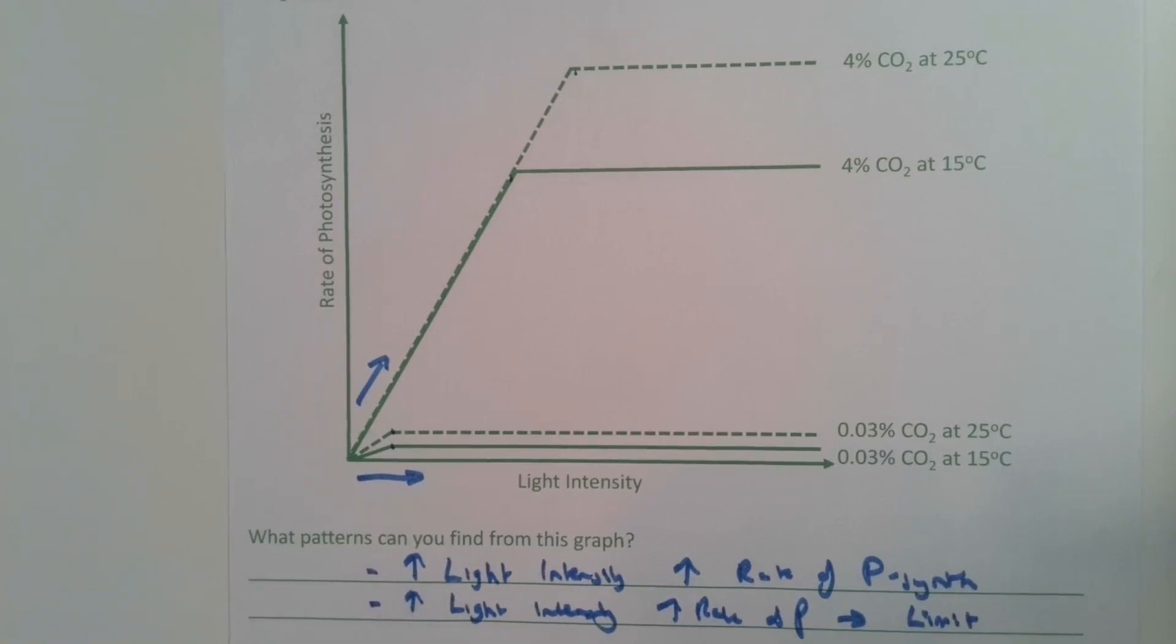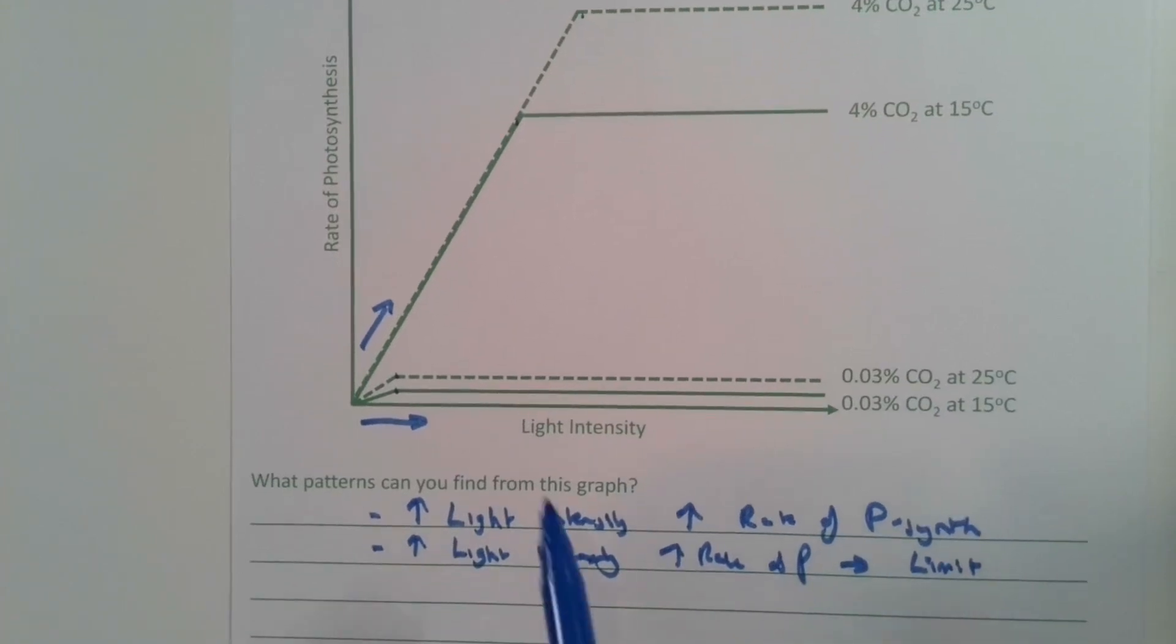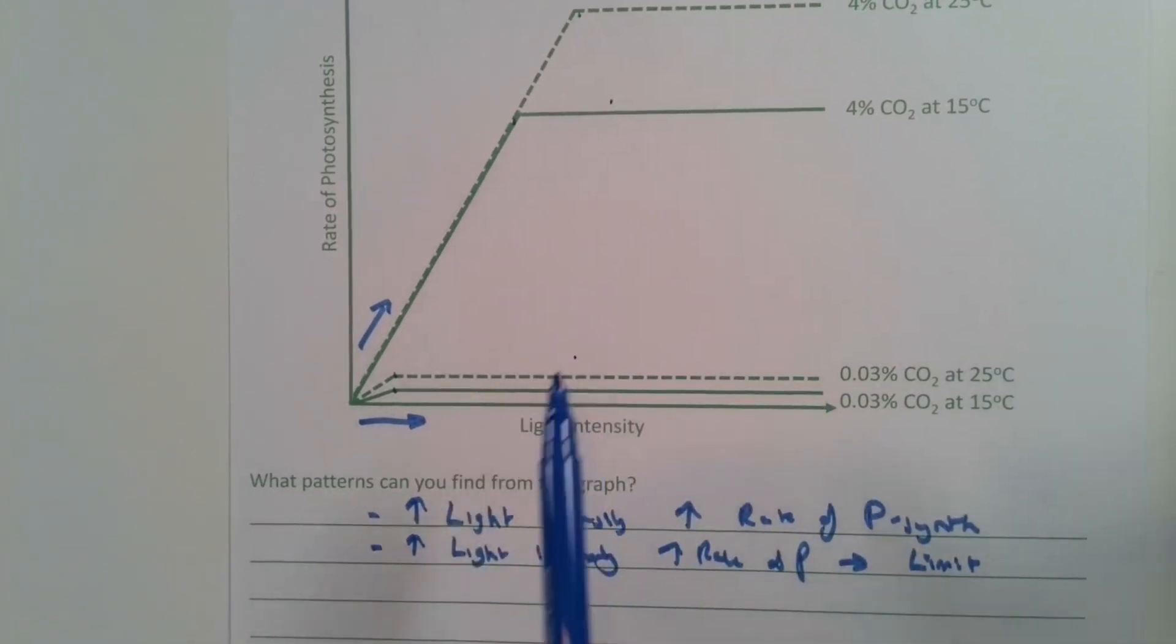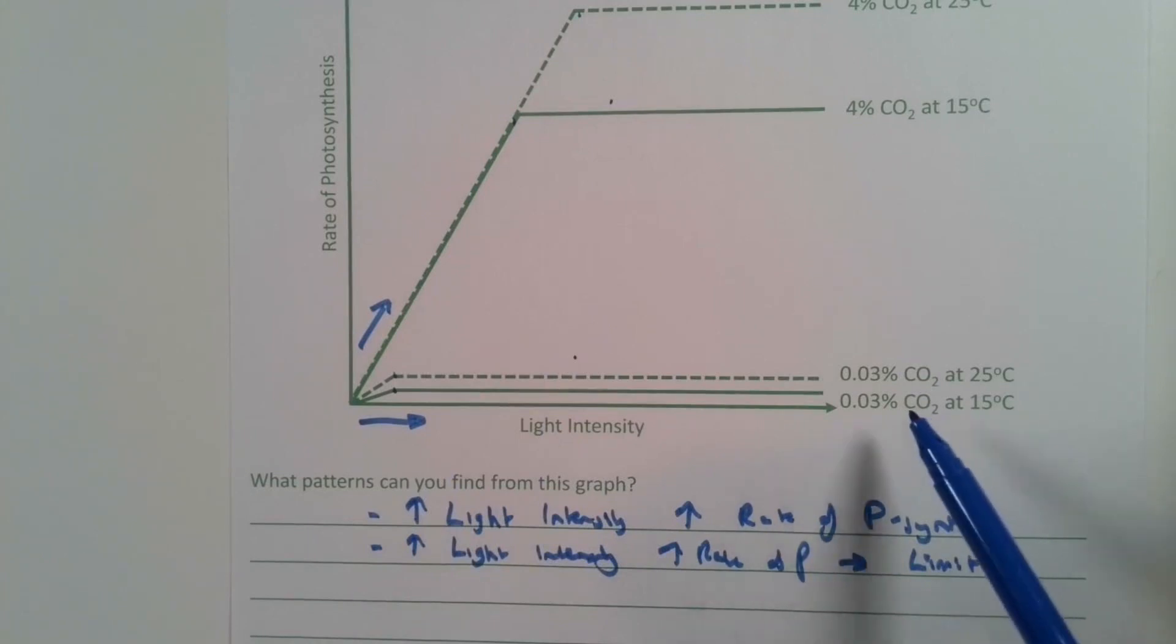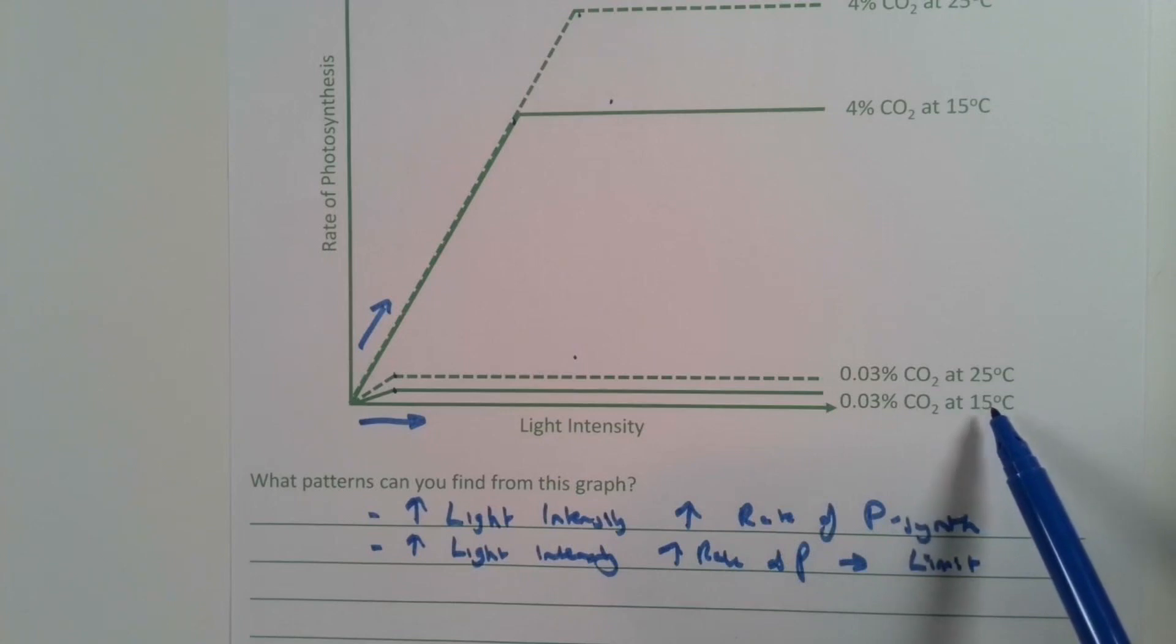So what about the third and fourth? Well, when it gets to this limit, for example here or here, what are the factors that stop it? We can clearly see that it's both carbon dioxide and temperature.